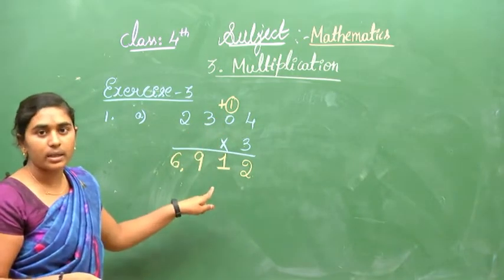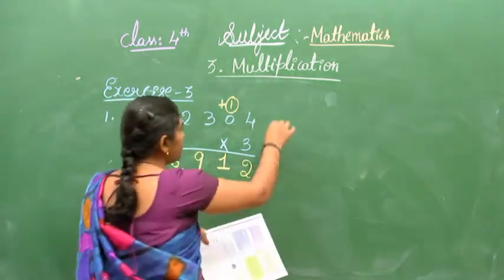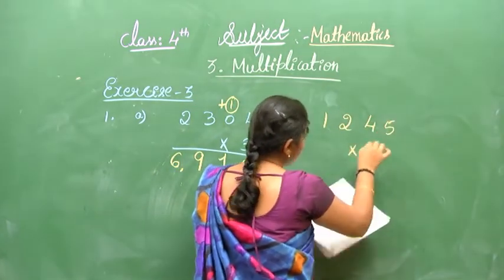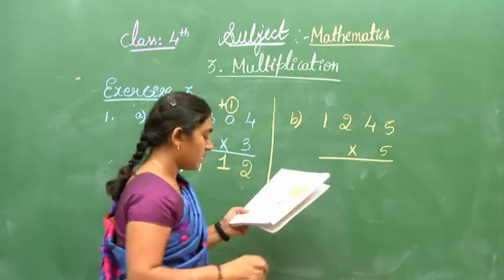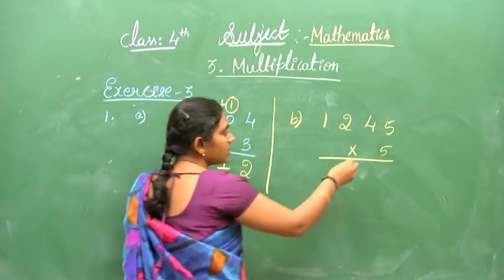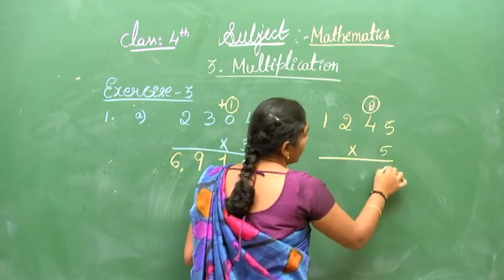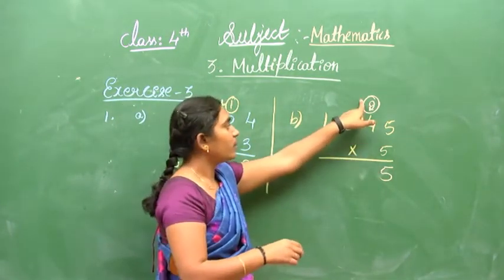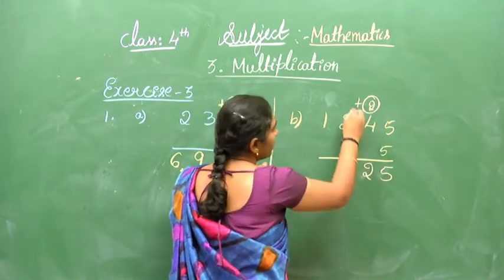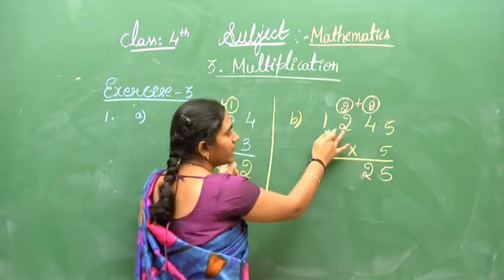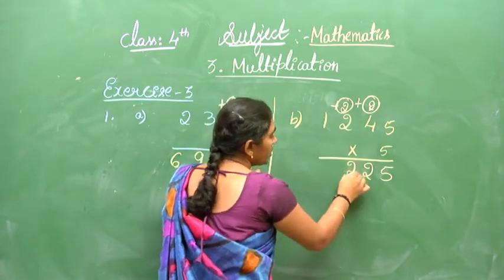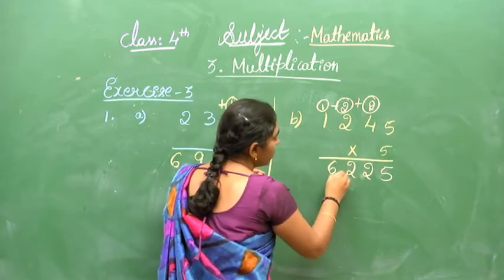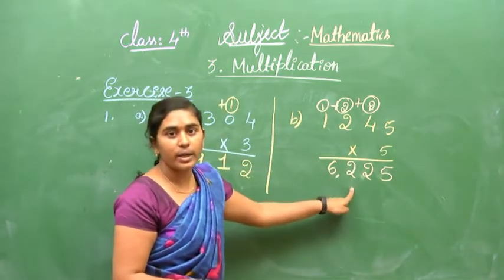Come on to the next one: 1,225 multiplied by 5. Start from the right. 5 times 5 is 25 — write 5, carry 2. 5 times 2 is 10, plus 2 is 12 — write 2, carry 1. 5 times 2 is 10, plus 1 is 11. 5 times 1 is 5, plus 1 is 6. The answer is 6,125.